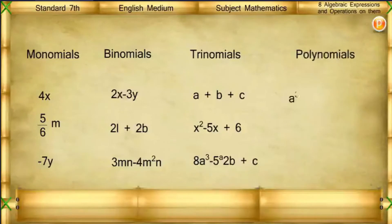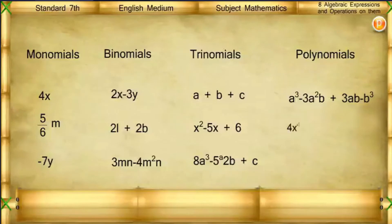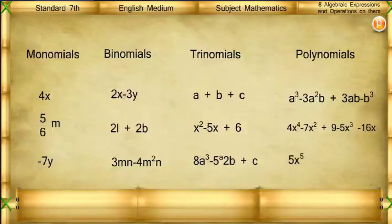Examples of polynomials: A cubed minus 3A squared B plus 3AB minus B cubed; 4X to the power 4 minus 7X squared plus 9 minus 5X cubed minus 16X; 5X to the power 5 minus 1/2 X plus 8X cubed minus 5.